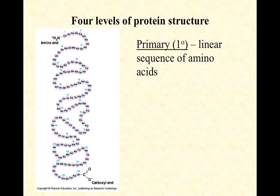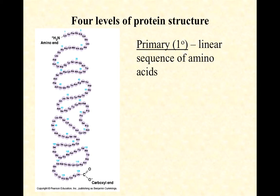There are four levels of protein structure. The primary structure is simply the linear sequence of amino acids — for example, lysine, valine, phenylalanine, glycine, arginine, and so on — all the way from the amino terminus to the carboxyl terminus, attached to each other by peptide bonds.